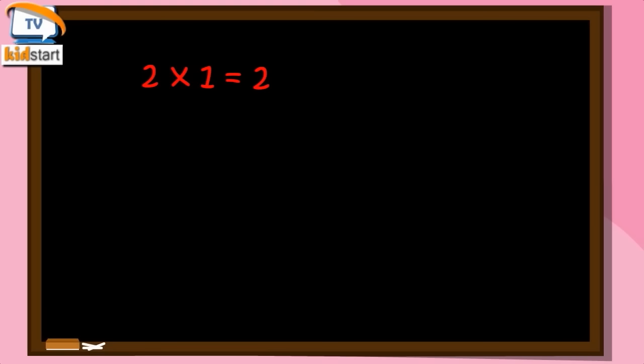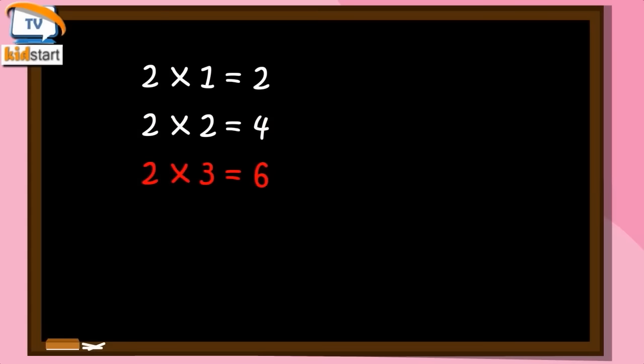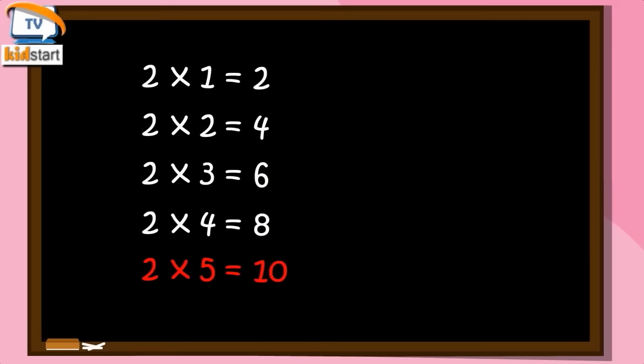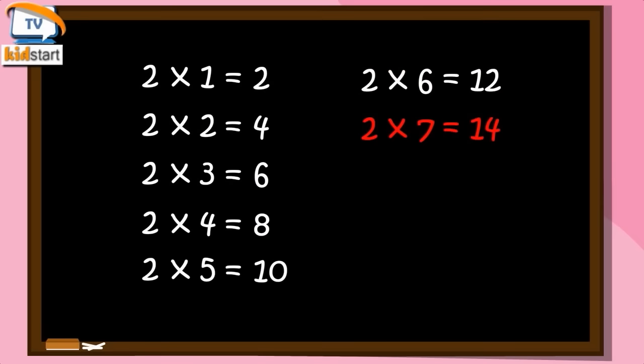Two ones are two. Two twos are four. Two threes are six. Two fours are eight. Two fives are ten. Two sixes are twelve.